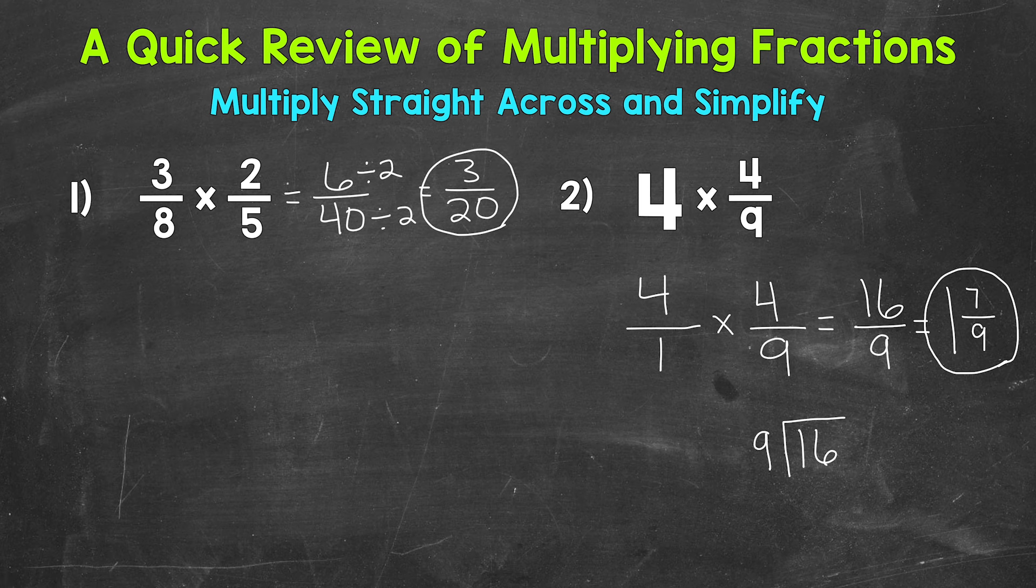So, how many whole groups of 9 in 16? Well, 1. That's our whole number right here. 1 times 9 is 9. We do not hit 16 exactly. We have a remainder of 7. So, remainder 7. That remainder goes right here. It's the numerator part of our fraction. And then we keep our denominator of 9 the same. This 9 right here. We keep it the same. So, 1 and 7 ninths as our final answer.